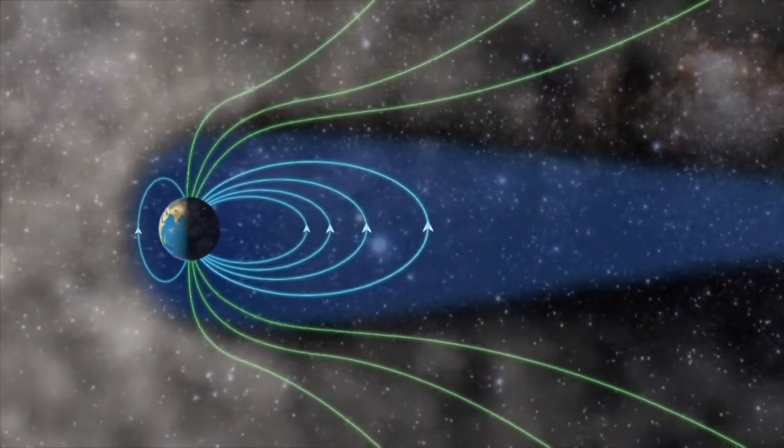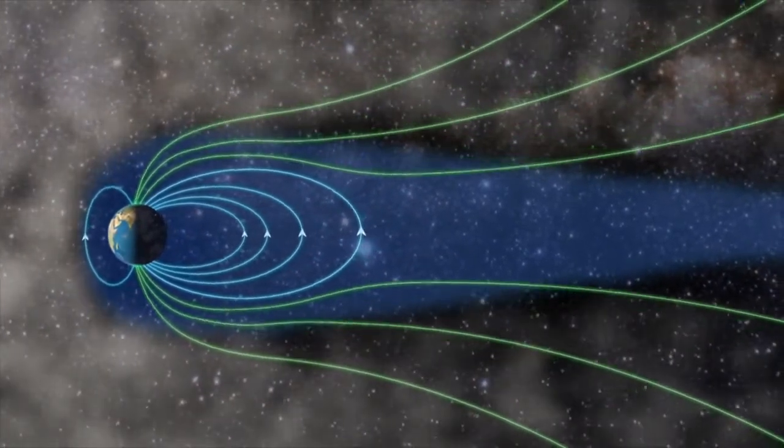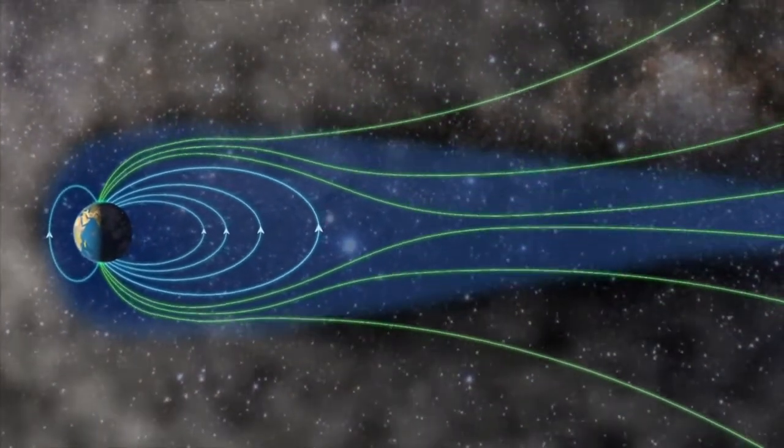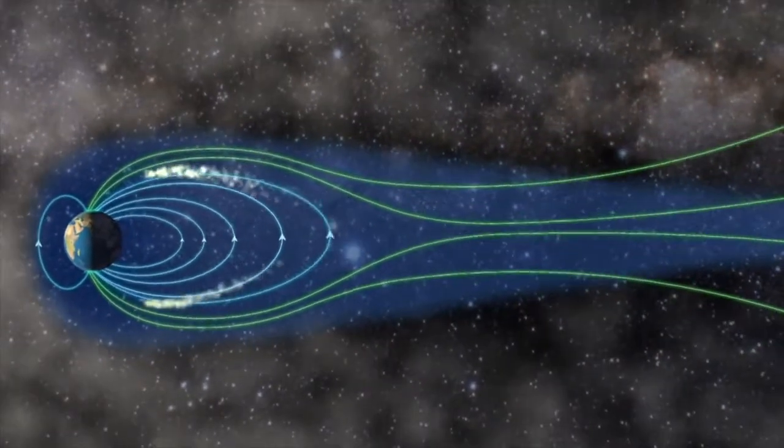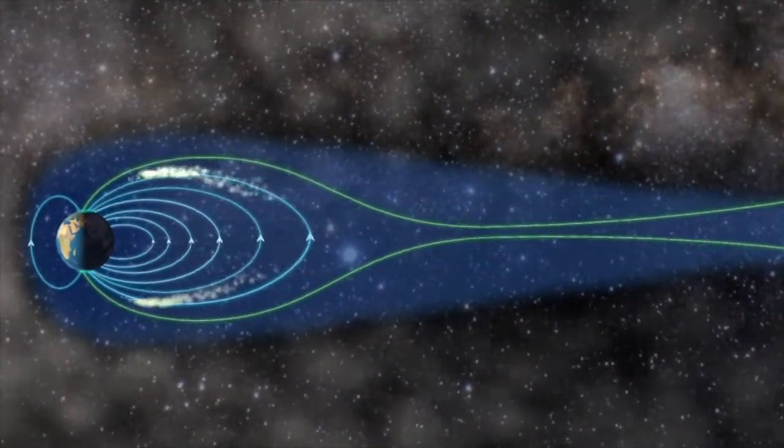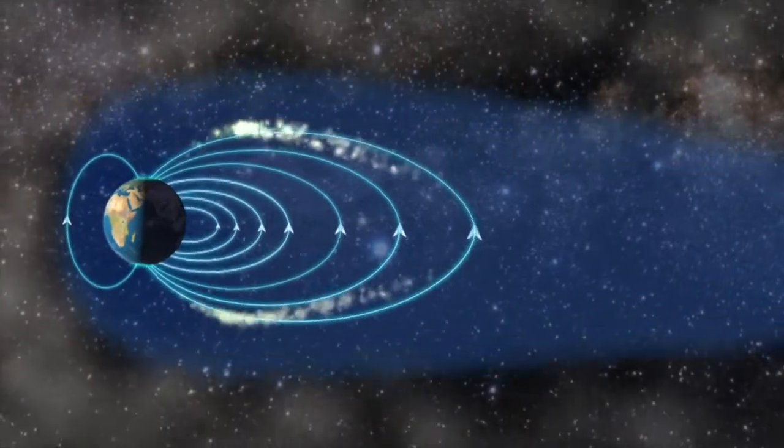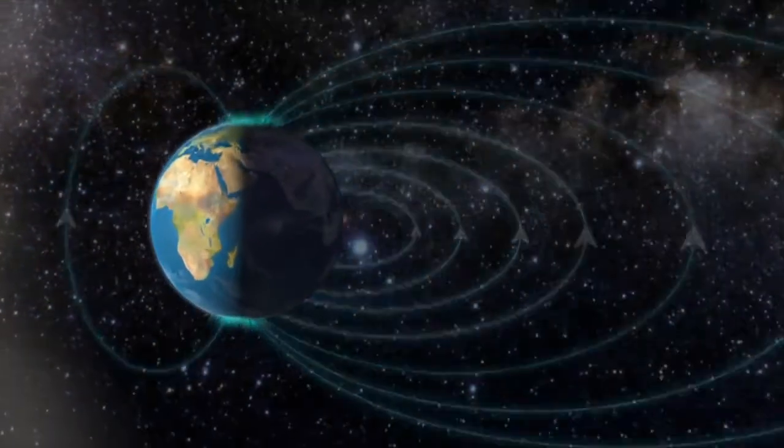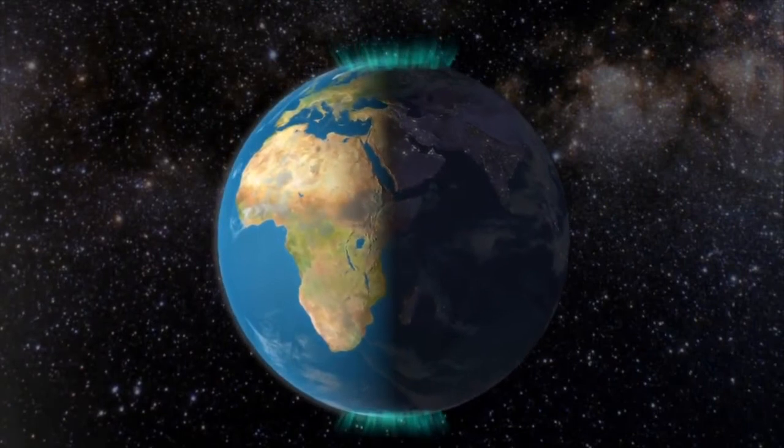The magnetic fields stretch further back and couple together. The magnetic rubber band breaks, and gas from the solar storm streams along the magnetic lines towards the poles on the night side. This is the nighttime aurora.